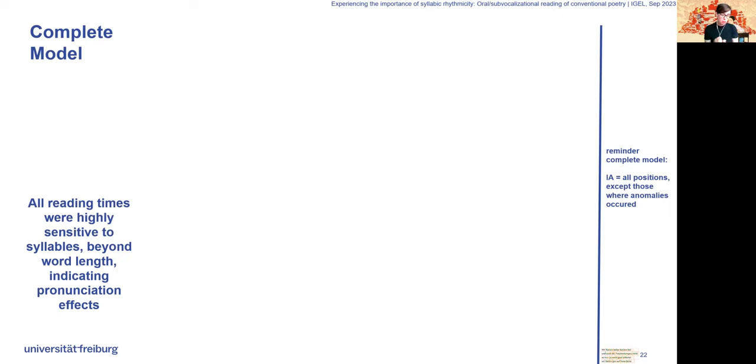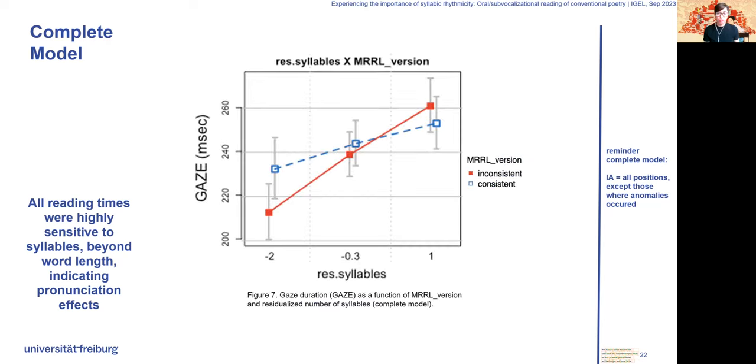We also found an interaction with version, meaning that words with more syllables were fixated even longer when anomalies occurred, indicating a more cautious sub-vocalization-based reading style.